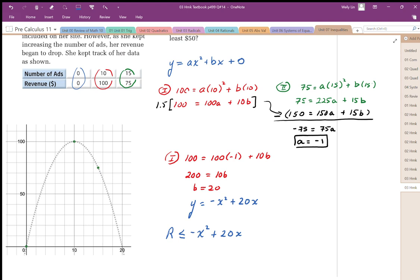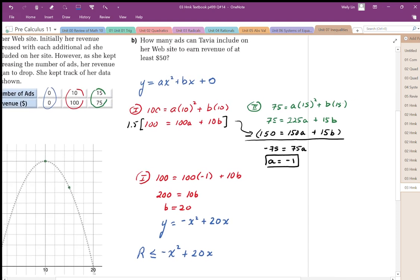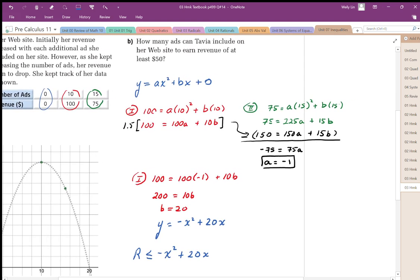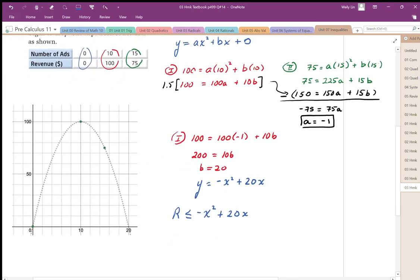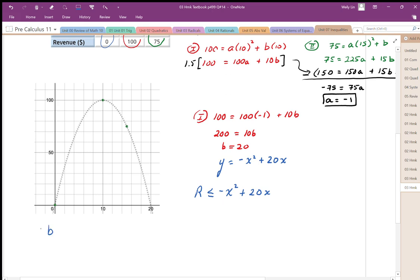Okay, so part B then says, how many ads can Tavia include in her website to earn revenue of at least $50? Okay, so for part B, we need to make the revenue $50, and we need to make at least that much, so we want our revenue to be above that. So we want our revenues to be above that $50.